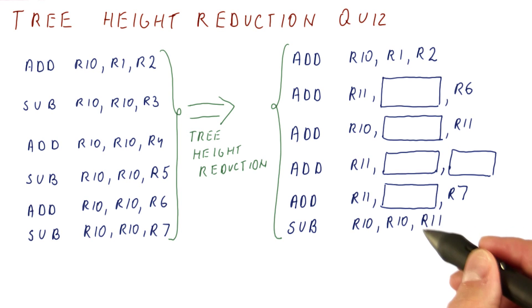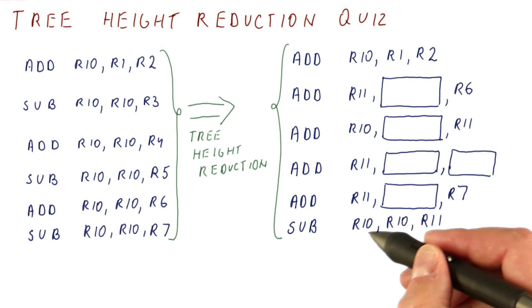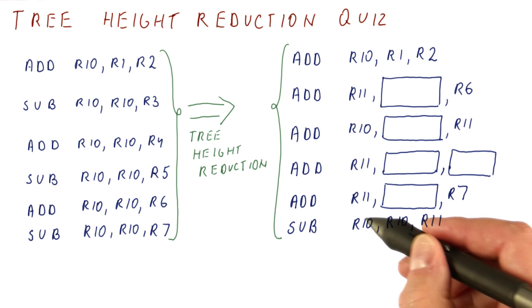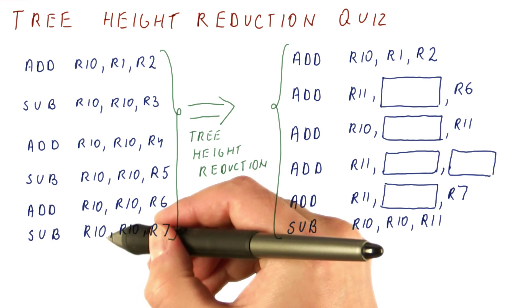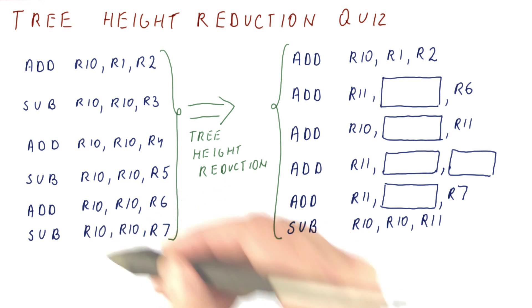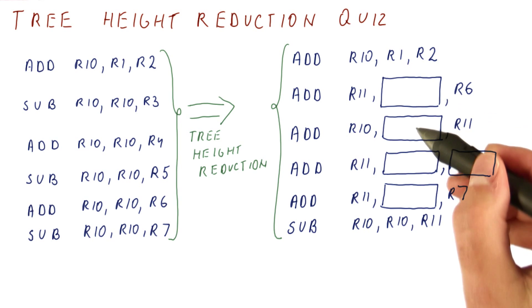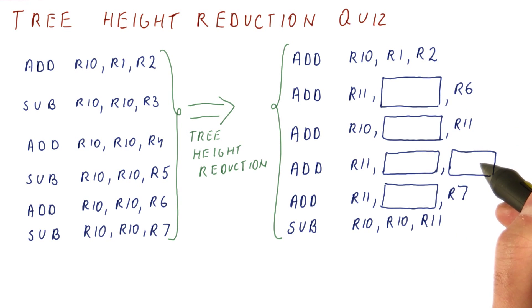And finally we will subtract R11 from R10 and get the final result in R10. This should be the same result that we got here. So the question for you is, what should be in these five places?